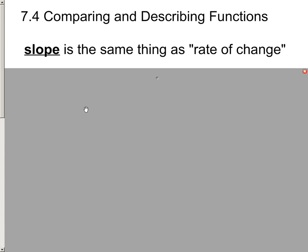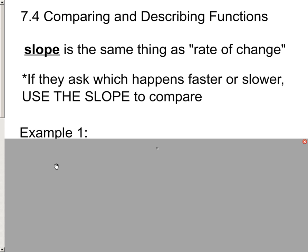So if you see the word rate of change in a story problem, that basically is its way of telling you to go find the slope for comparison. Or if they're talking about how fast or how slow something's happening, then if you can actually find the slope of that linear function, you'd actually be able to see which one's happening faster.